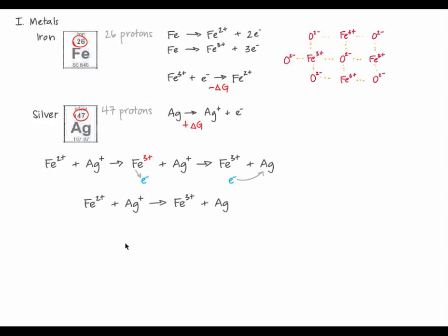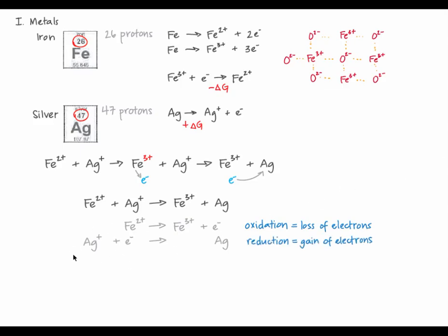This transfer of electrons from one atom to another is an example of a redox reaction. Iron 2+ lost an electron, which is called an oxidation — iron 2+ was oxidized to iron 3+. And silver+ gained an electron, which is called a reduction — silver+ was reduced to neutral silver. These two processes are called half-reactions, and they're coupled to form the overall redox reaction.